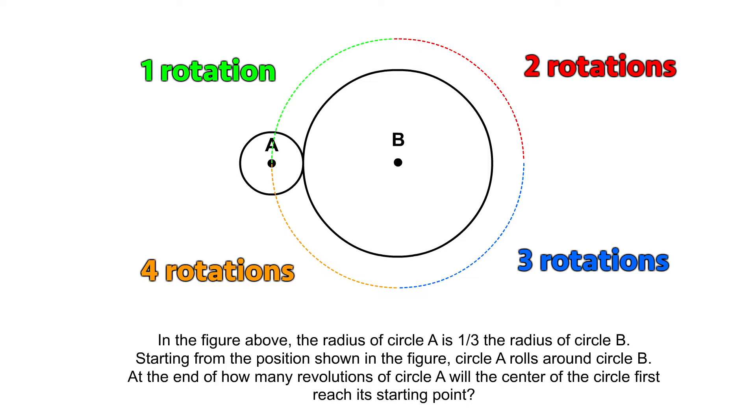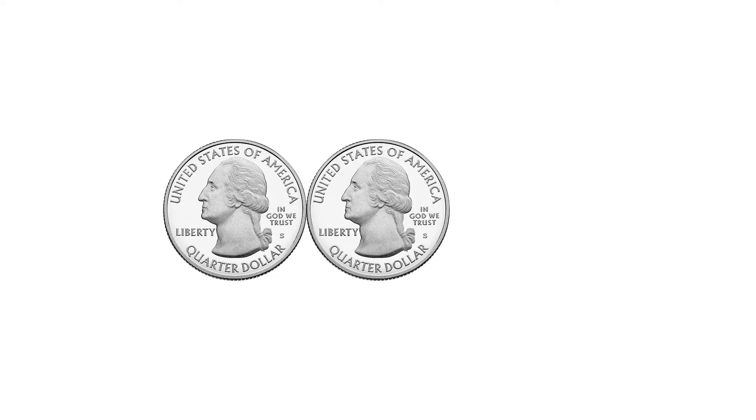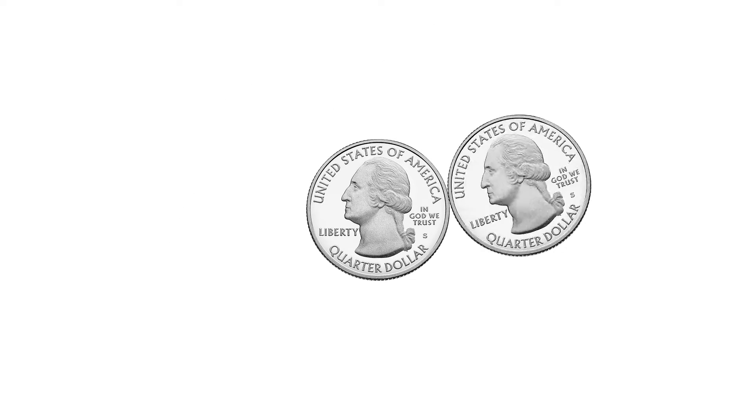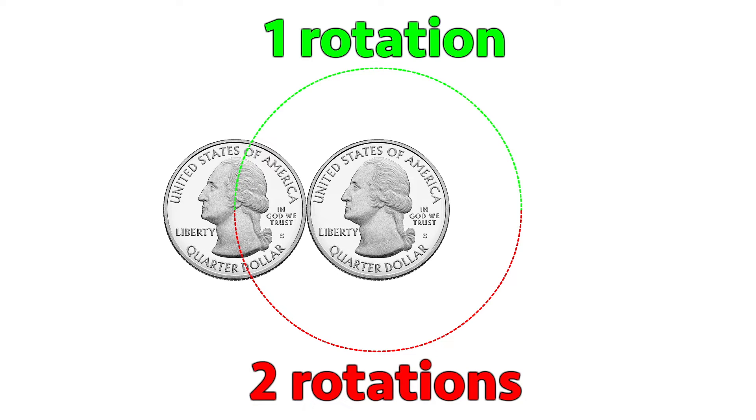The answer is four but there may be more than one answer. Veritasium first begins with an example of two identical coins and rolls one coin around the other to see how many times it rotates. And surprisingly it rotates twice.